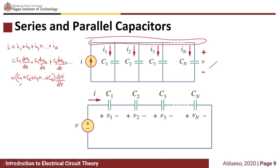For parallel connected capacitors — the same as series connected resistors — they have equivalent voltage: V1 = V2 = V3 = ... = VN = V. So the expression becomes (C1 plus C2 plus C3 plus dot dot dot plus CN) times dv/dt, where that sum is our equivalent capacitance. For capacitors connected in parallel, the equivalent capacitance equals the sum of all individual capacitors.